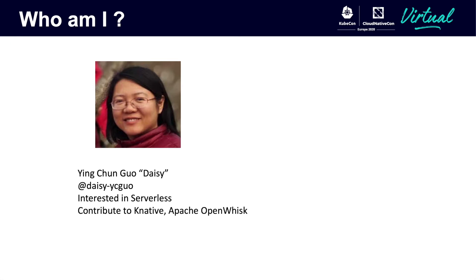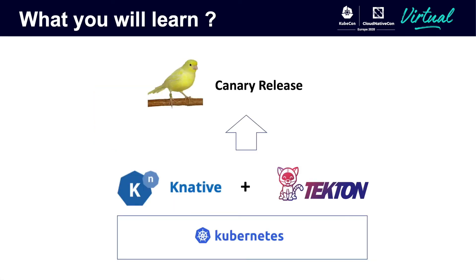I have a long history in open source projects, from OpenOffice to OpenStack, and now I focus on serverless open source projects. I have been working on serverless projects for quite a bit of time. I'm a committer of Apache OpenWhisk and an active contributor of Knative. In this session, I will share a way to use Knative and Tekton to build a canary release pipeline on top of Kubernetes. I will show a live demo and touch some part of the technical details.